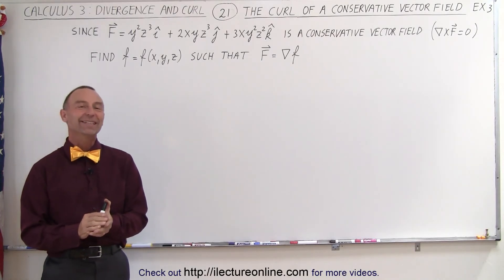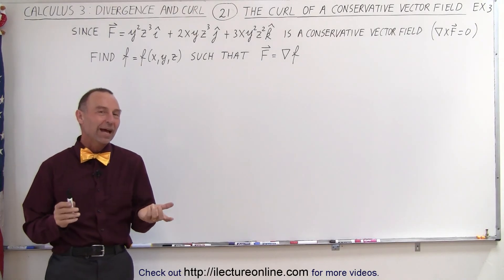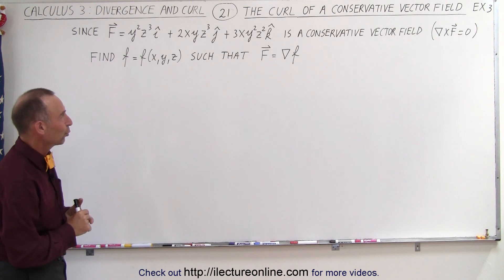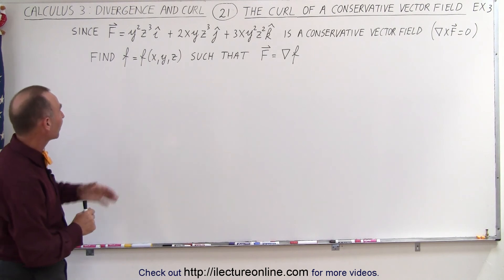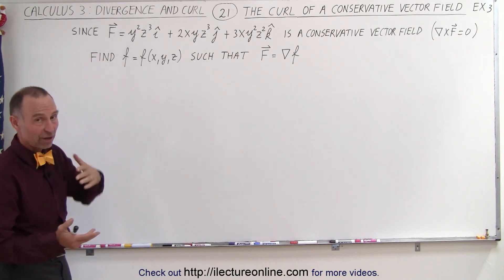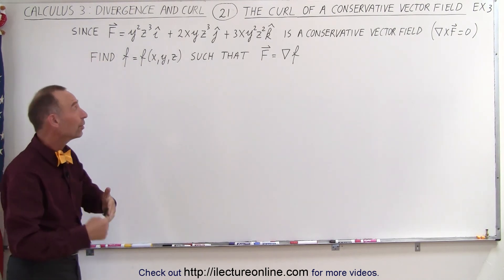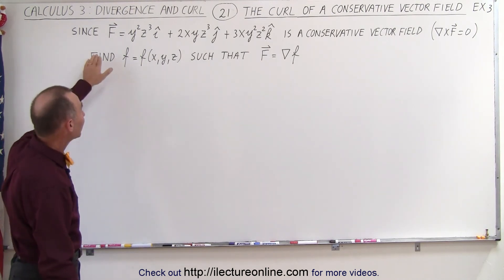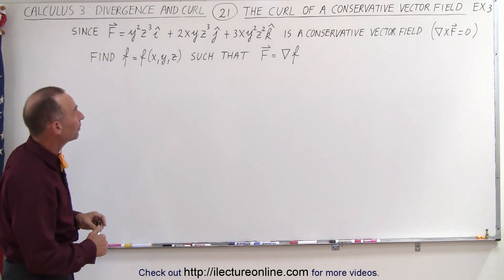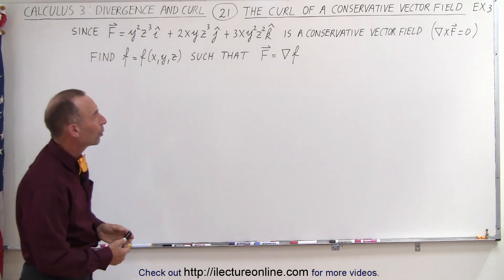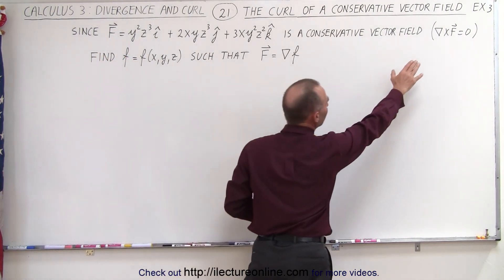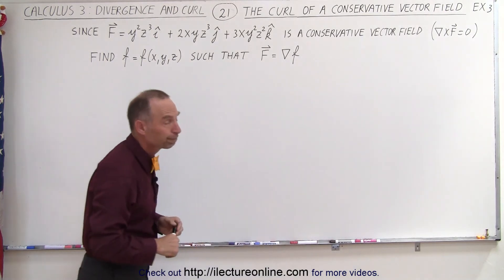Welcome to ElectronLine. Here we have an example with a slightly different twist. We're given this vector field, and as we saw in the previous video, this is indeed a conservative vector field, and therefore the curl of the vector field is equal to zero.